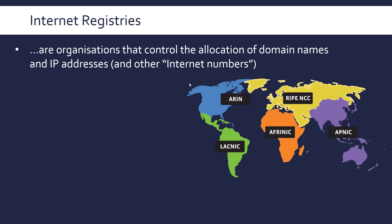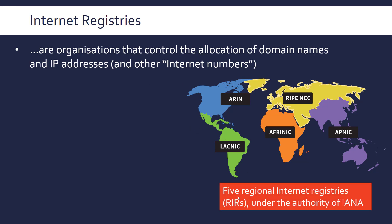The main ones you may have come across are these five, called regional internet registries — one for almost each continent. These are all under the authority of a broader organisation called IANA, which itself is under the overarching control of ICANN, which used to be run by the US Department of Commerce. IANA stands for Internet Assigned Numbers Authority — that's where the term 'internet numbers' comes into this equation.